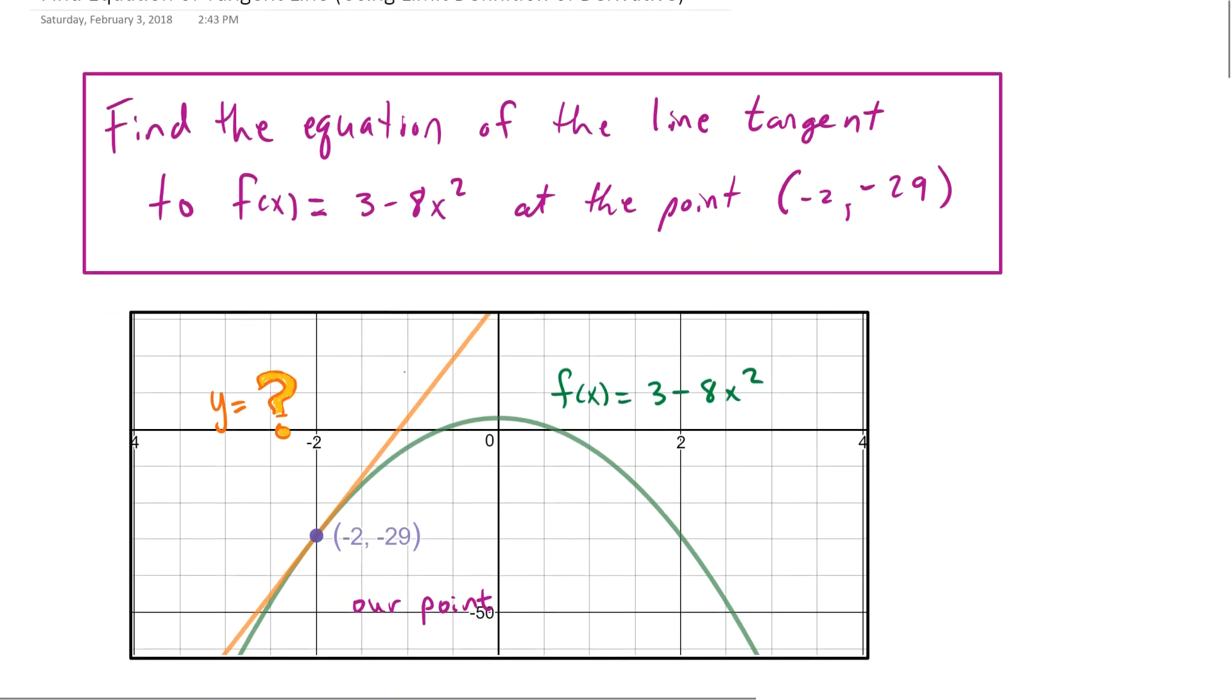So if this is our problem, we want to find the equation of a line tangent to a function, 3 minus 8x squared, at a specific point. And the point is negative 2, negative 29.